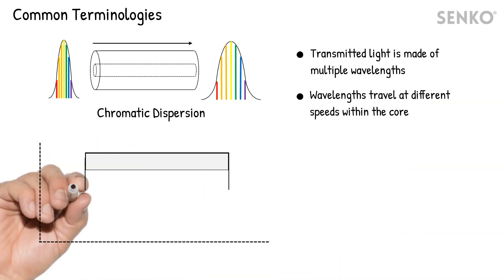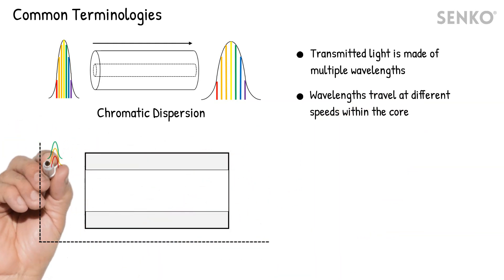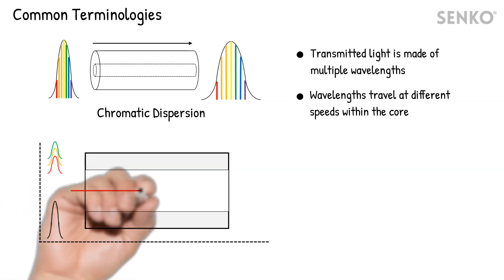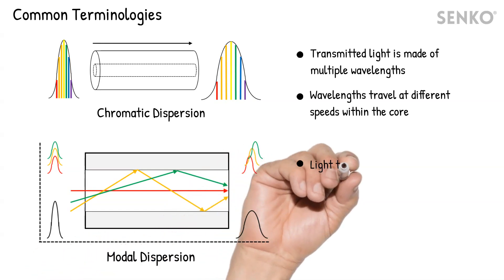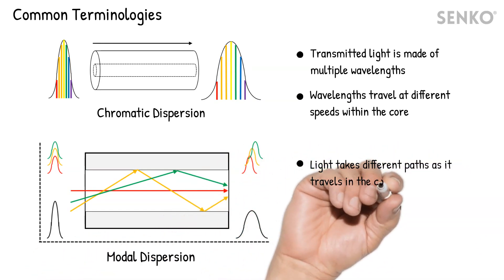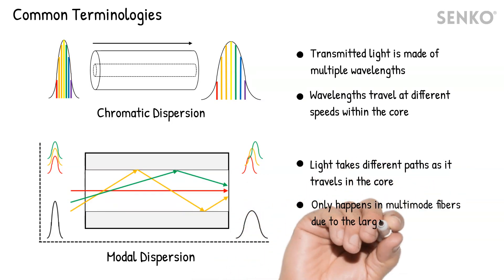In multi-mode fibers, optical signals experience another form of dispersion called modal dispersion. Modal dispersion is caused by the difference in light paths that light can take in multi-mode fiber, and can even occur with a monochromatic light source.